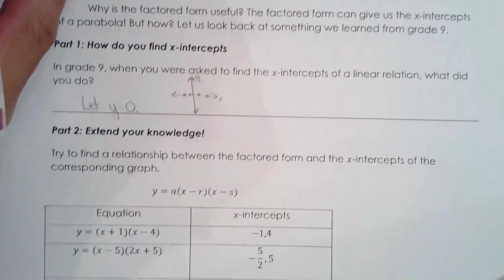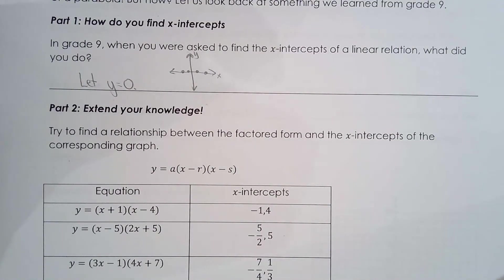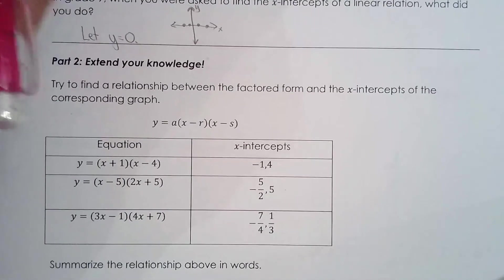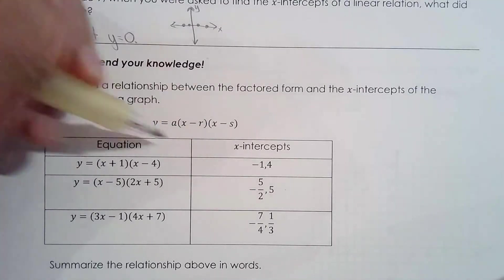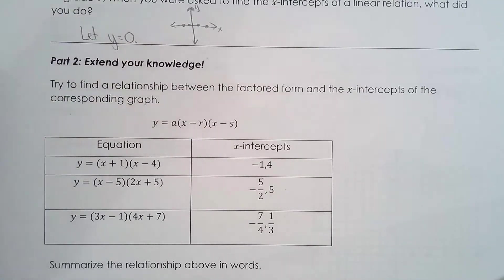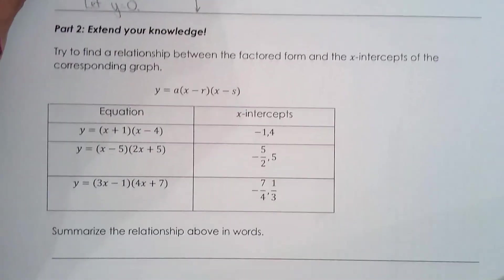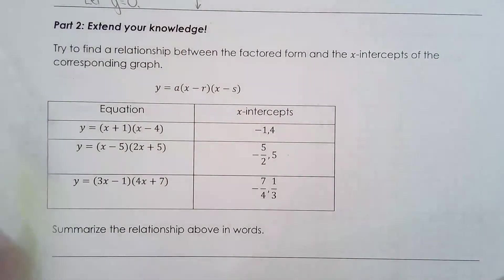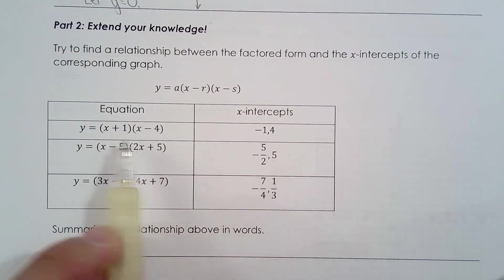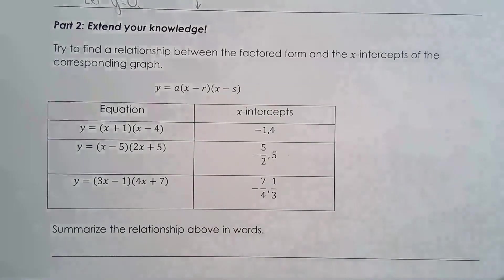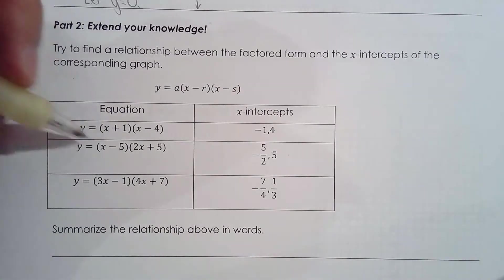This is important because we want to do the same thing — find the x-intercepts from factored form. In general, we want to find the x-intercepts of the quadratic relation, but we're focusing on factored form here. The factored form is y equals a times (x minus r)(x minus s). Take a look at the factors and the x-intercepts — is there a connection between them?